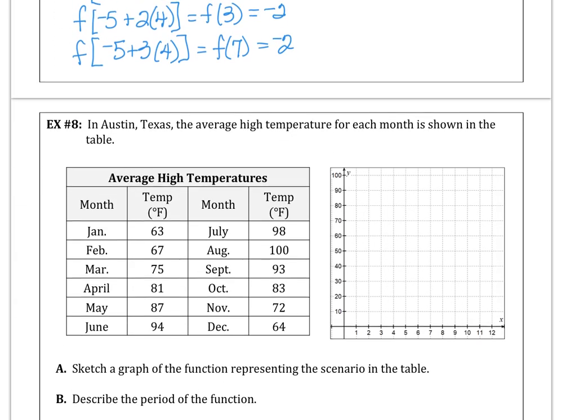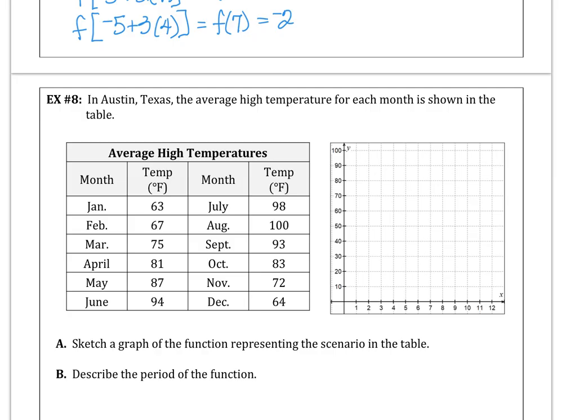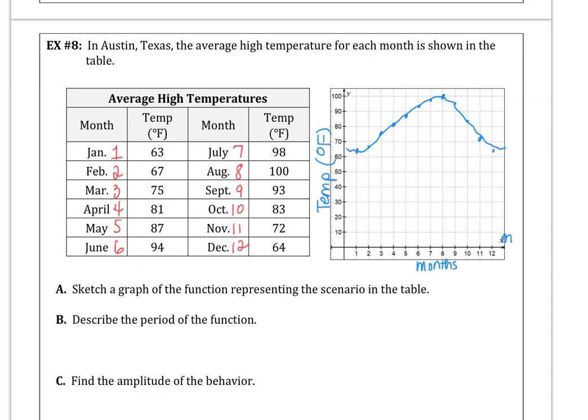Example 8 is giving us the temperature high averages in Austin, Texas for each month. Our job is to graph that, so I want to use the x-axis as 1, 2, 3, 4, through 12, so that we have all the months showing up on our graph in the first 12 segments on the x-axis. So spend a minute with me graphing this curve on the grid. I have my picture here. I've sketched the graph, labeled the x-axis as m for months, and labeled the y-axis as capital T for temperature in degrees Fahrenheit. If we describe the period of the function, I would say that's 12 months or one year.